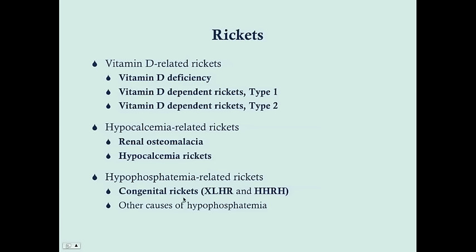The causes of rickets are vitamin D related — either nutritional vitamin D deficiency or secondary vitamin D deficiency typically due to malabsorption from Crohn's disease, celiac disease, or cystic fibrosis. There's also vitamin D dependent rickets, which is not due to poor vitamin D intake but rather to metabolic issues.